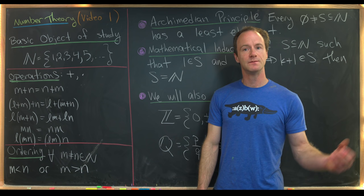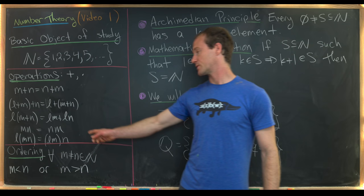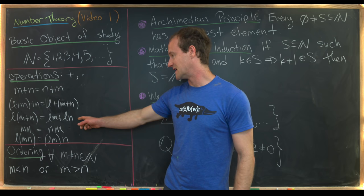There are two standard operations on the natural numbers: addition and multiplication. Addition is commutative and associative. Multiplication is commutative and associative, and furthermore we've got this nice distributive rule of multiplication over addition.